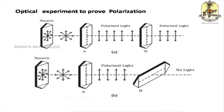Now we consider an optical experiment to prove polarization. We use a tourmaline crystal whose faces are parallel to the crystallographic axis. When unpolarized light falls on the tourmaline crystal, it emerges from the other face slightly colored due to the color of the crystal. When we rotate this tourmaline crystal, we observe that there is no change in the intensity.